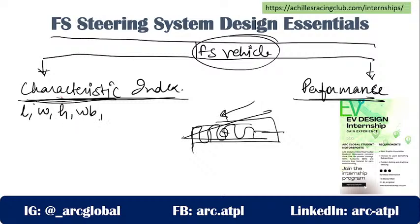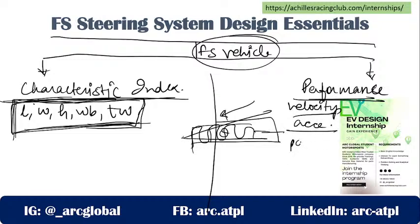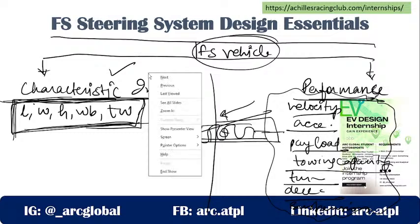The characteristic parameters are the overall length, width, height, wheelbase, and track width of the vehicle - these remain unchanged irrespective of any kind of road. In contrast, performance parameters like velocity, acceleration, payload capacity, towing capacity, turning radius, deceleration, and suspension travel are all subjective to changes depending on the track conditions.